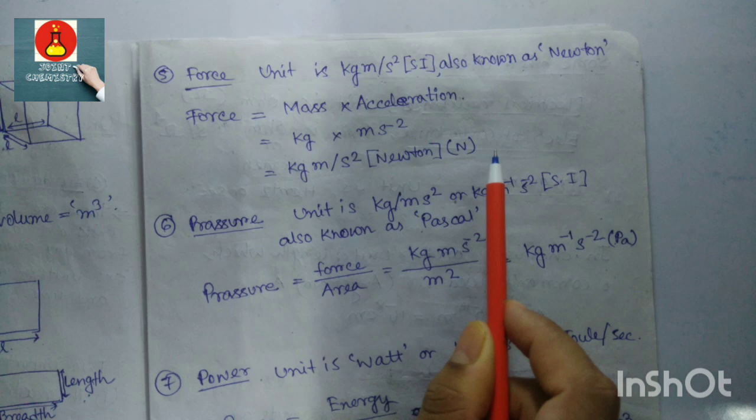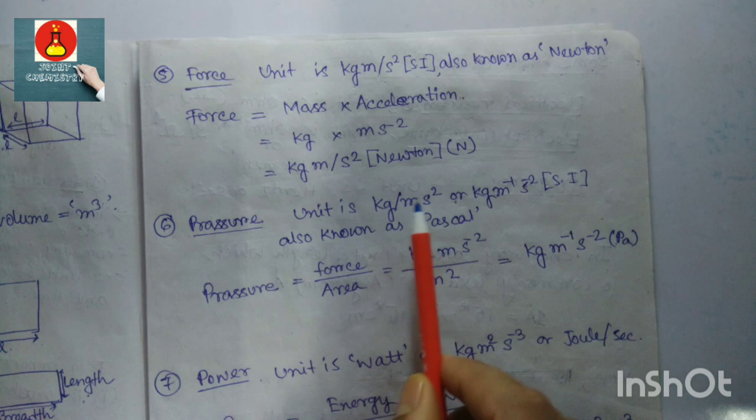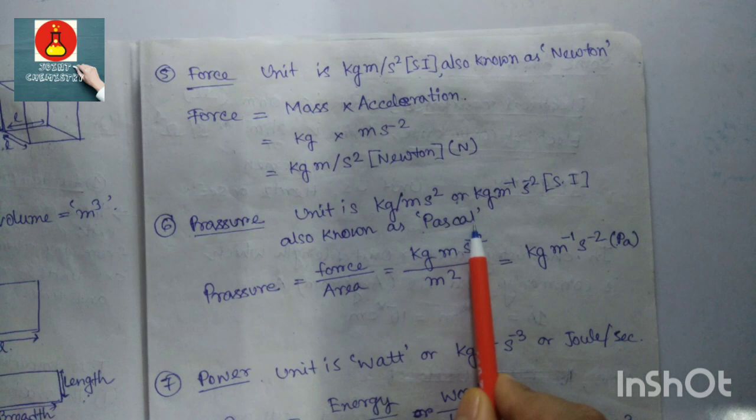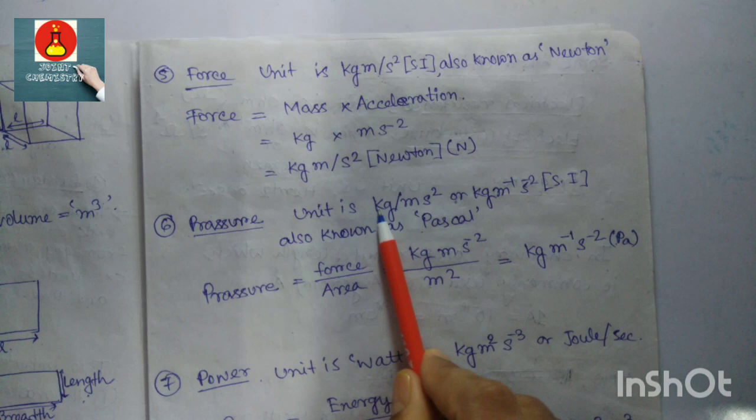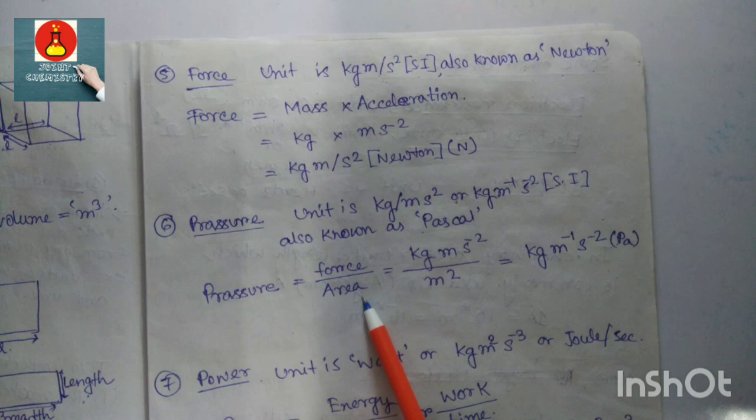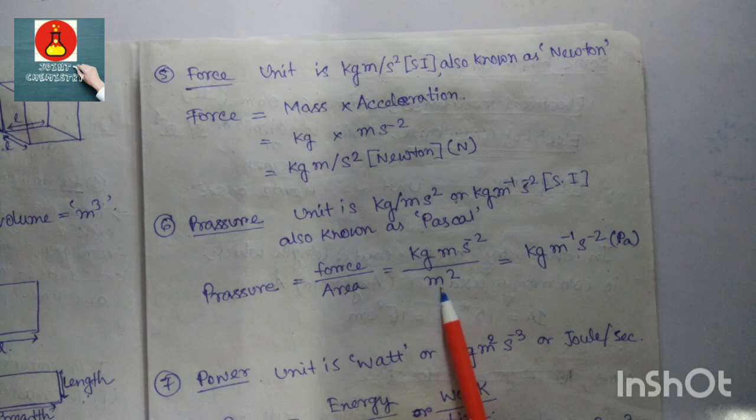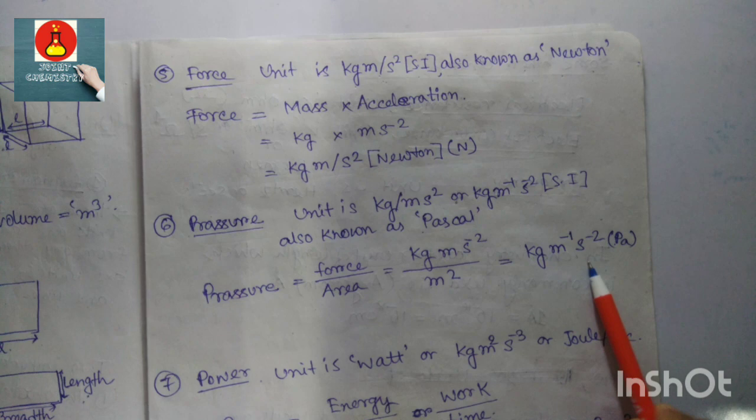The symbol for Newton is capital N. Pressure: the SI unit is kg/(m·s²), also known as Pascal. Pascal equals kg per meter per second squared. Pressure equals force divided by area, so force in kg·m/s² divided by area in m² equals kg·m⁻¹·s⁻², which is Pascal.